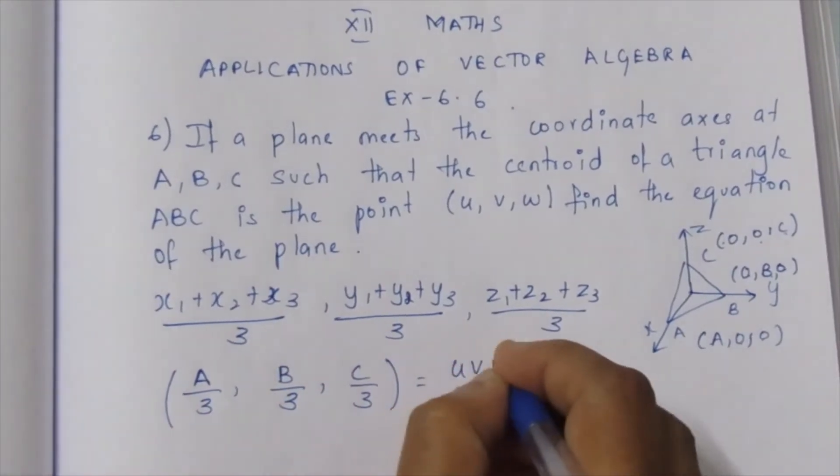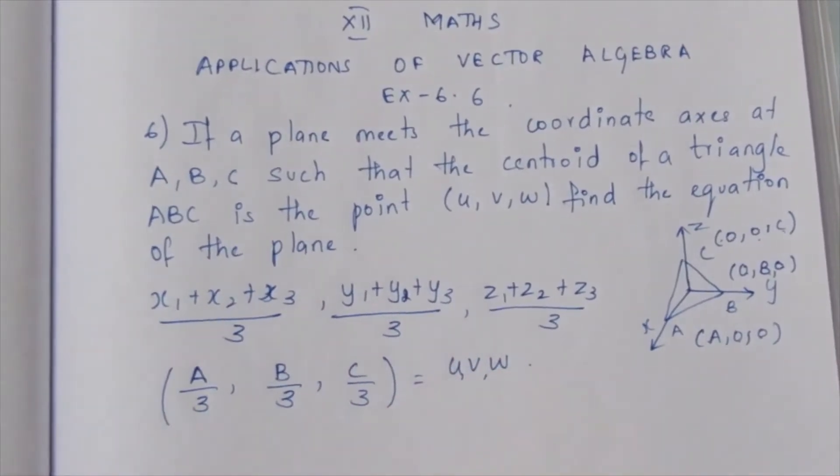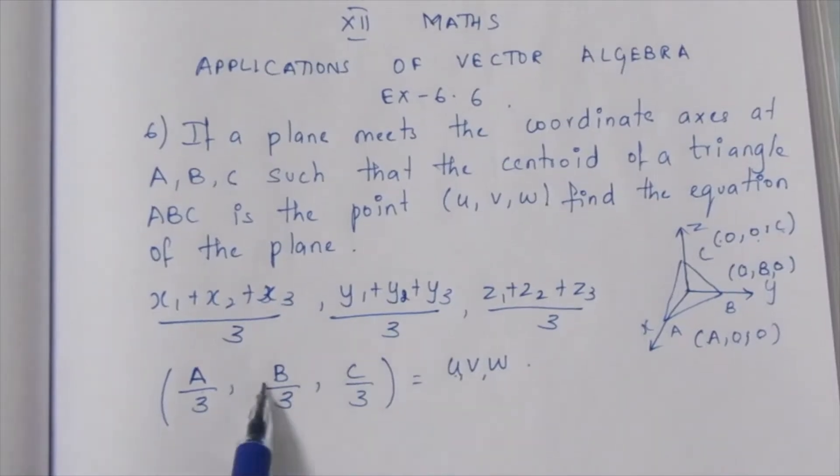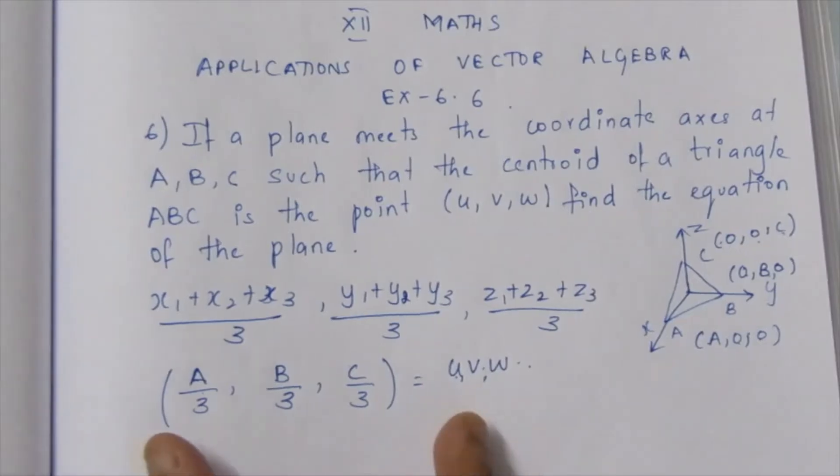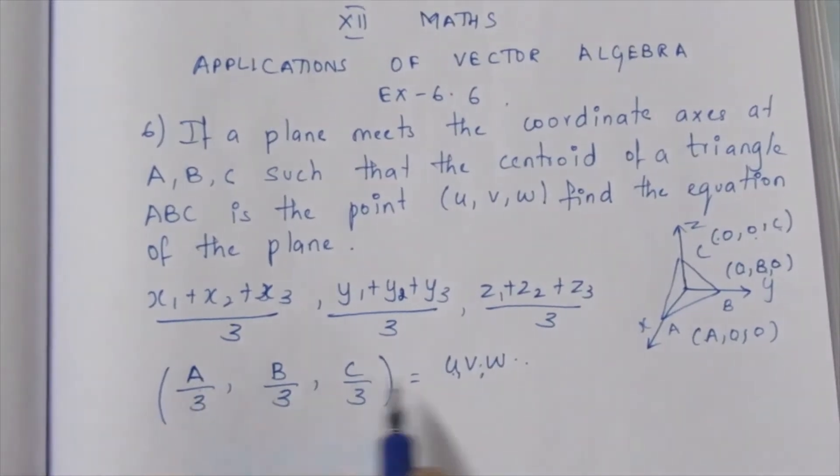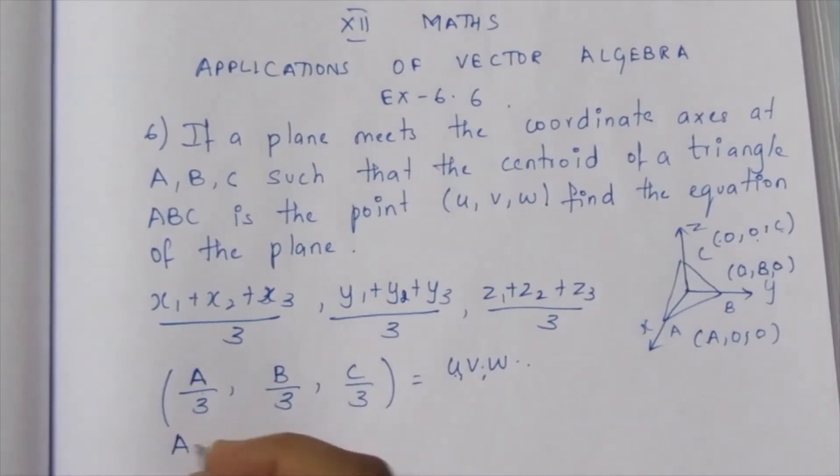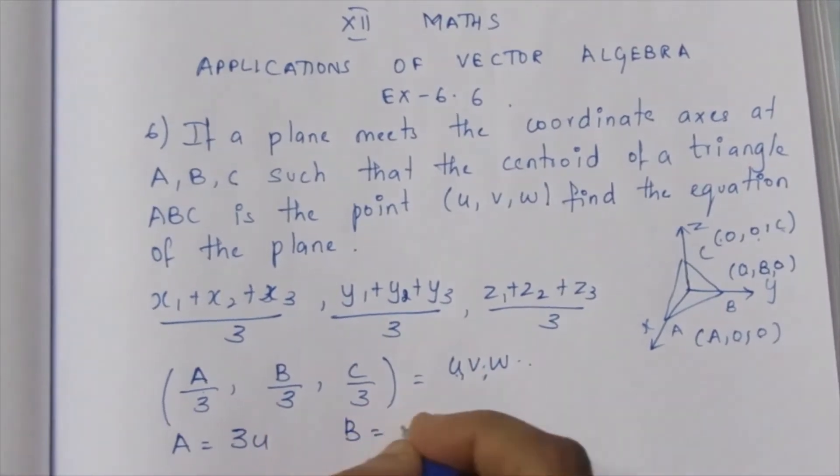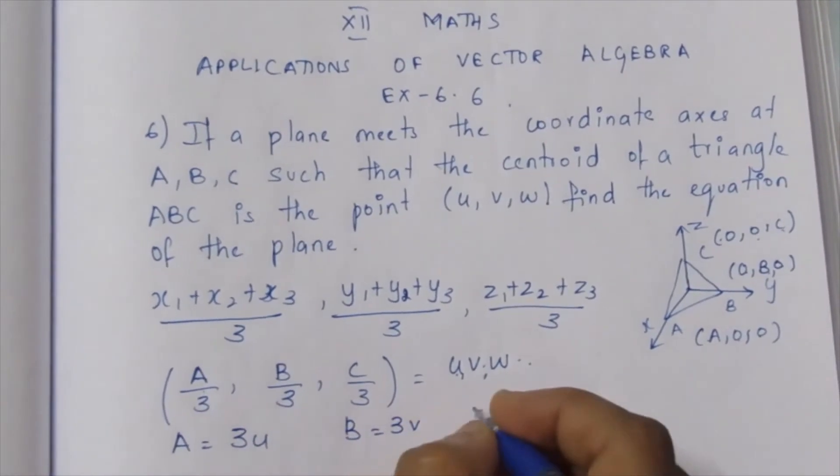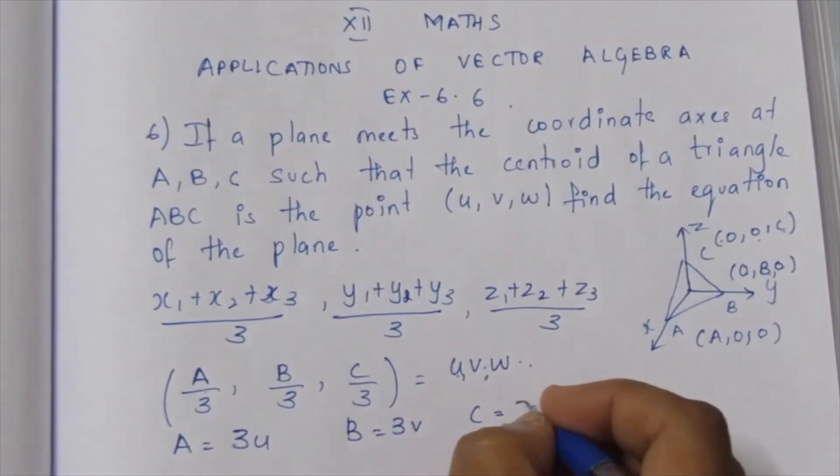The first coordinate equals u, second equals v, third equals w. We equate: a/3 = u, so A = 3u. Similarly, B = 3v and C = 3w.